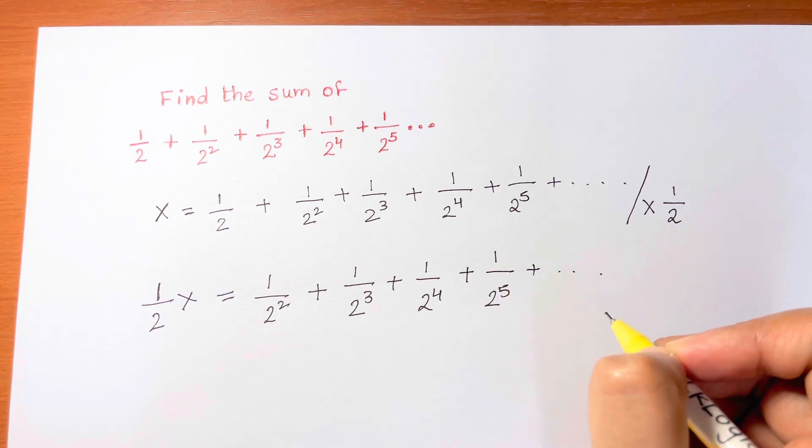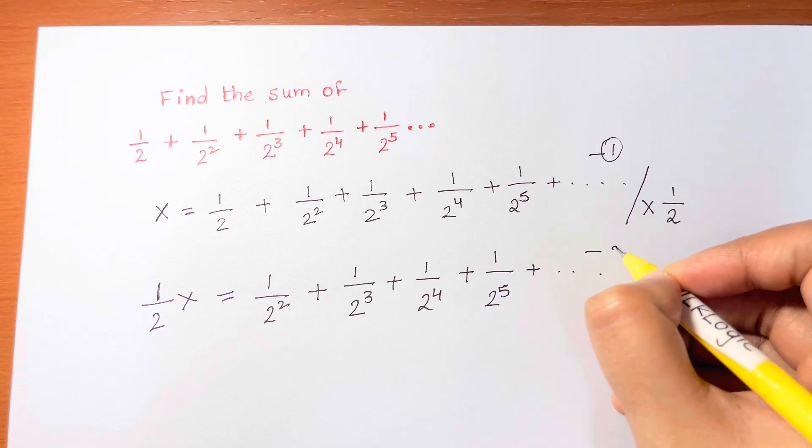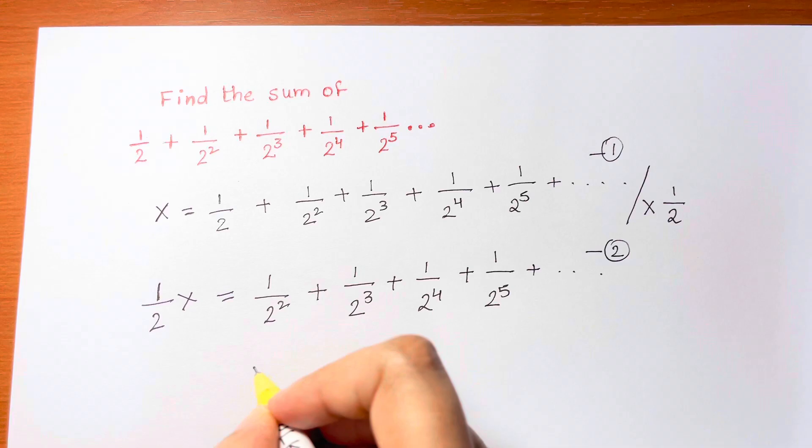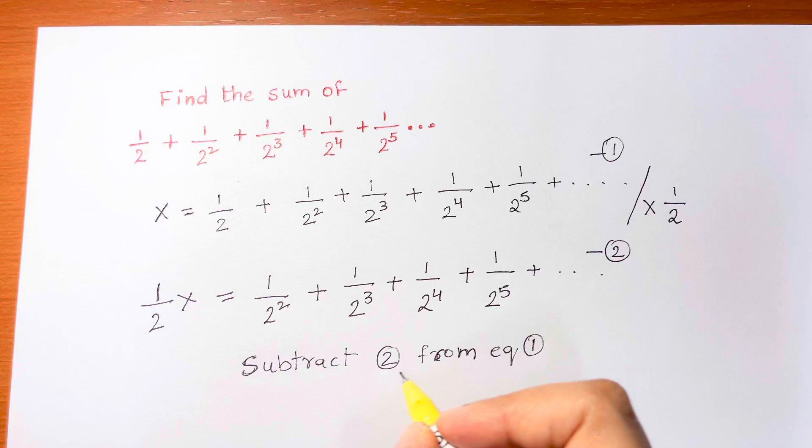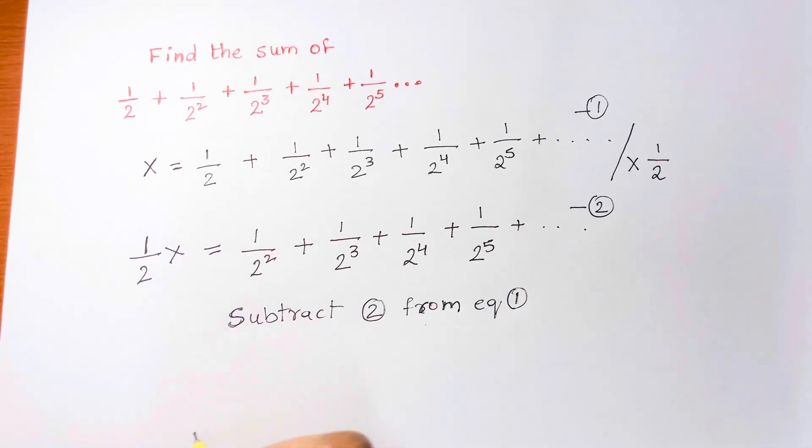Now let this be equation 1 and let this be equation 2. So what we are going to do is subtract two equations—subtract equation 2 from equation 1. So what do we get when we subtract?